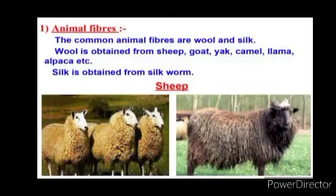Students, next we are going to know about animal fibers. Wool and silk fibers are obtained from animals. Wool is obtained from the fleece of sheep or goat, and silk fiber is drawn from the cocoon of silkworm. The common animal fibers are wool and silk.